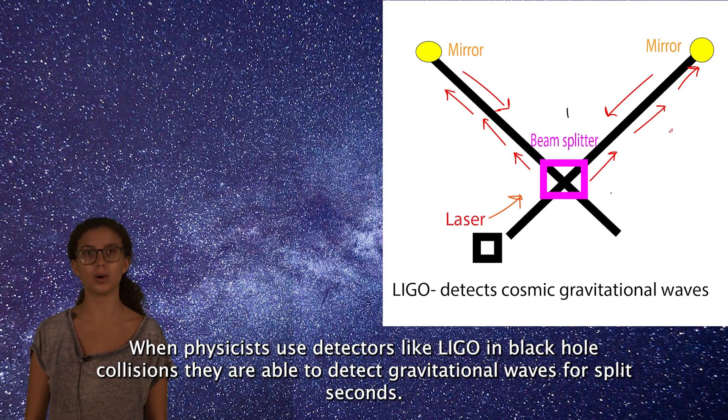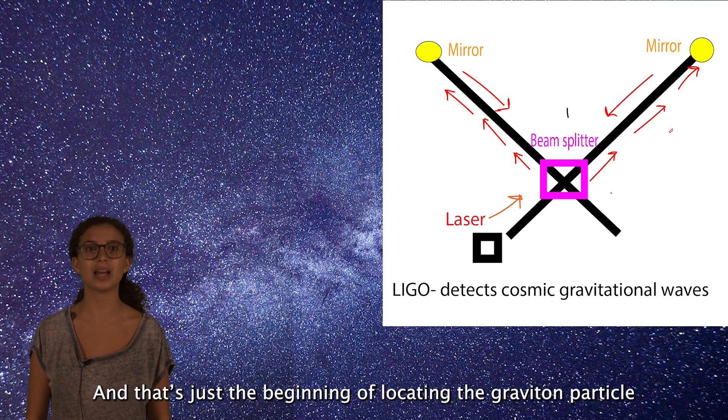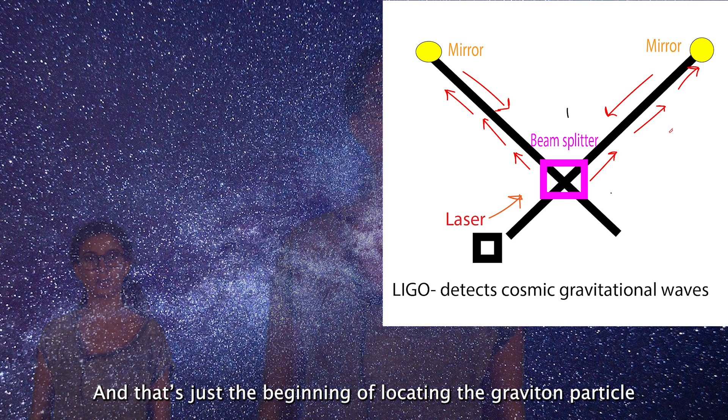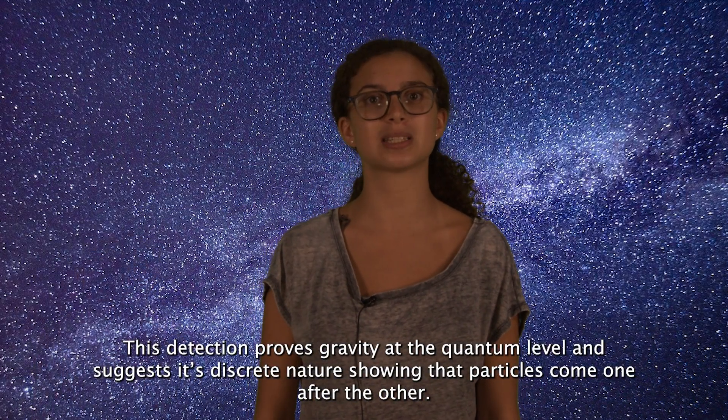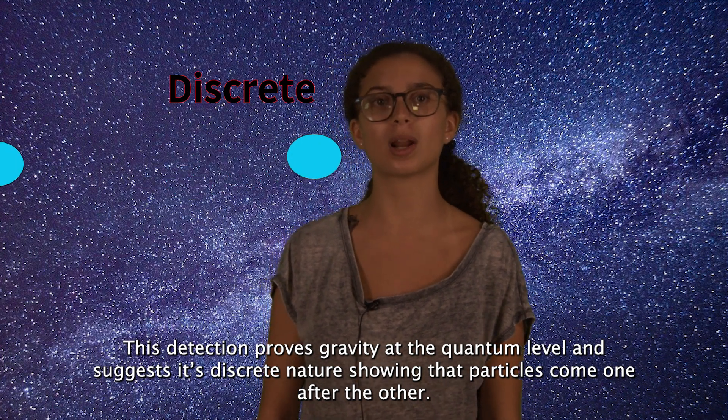When physicists use detectors like LIGO in black hole collisions, they are able to detect gravitational waves for split seconds, and that's just the beginning of locating the graviton particle. This detection proves gravity at the quantum level and suggests its discrete nature, showing that particles come one after the other.